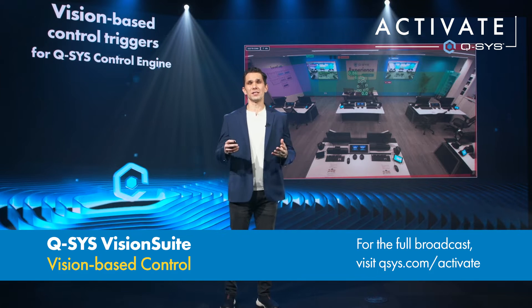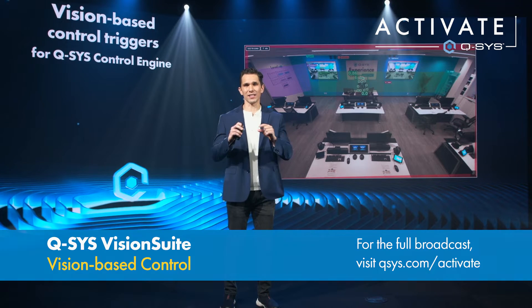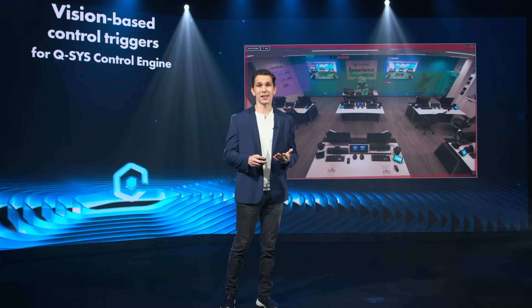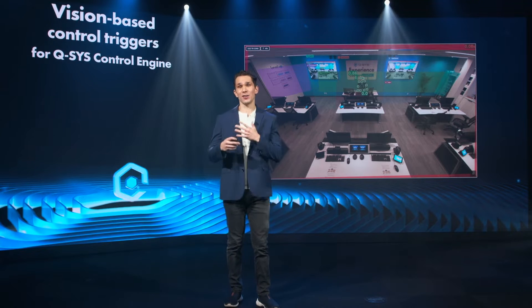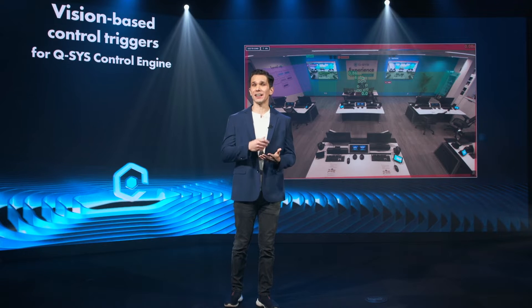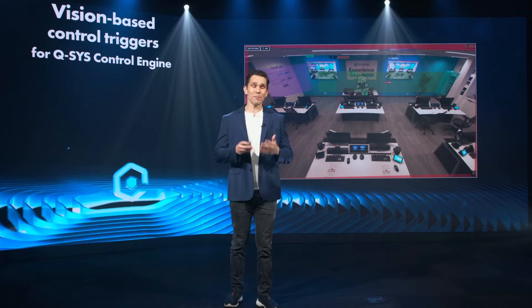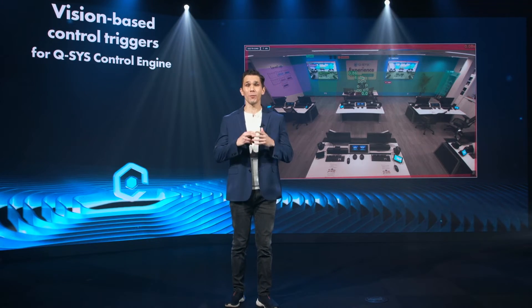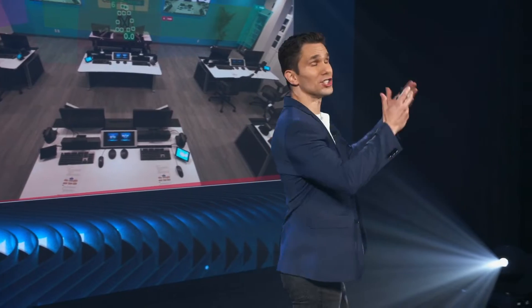Not only can you use these trigger zones and trigger areas to trigger camera-based activities, but because you have at your disposal the full might of the control engine integrated into that core processor, it means you can effectively use vision to trigger almost anything. So if you wanted a scenario where you want the presenter's lighting to change when he walks in a specific area, you can do that with a given trigger zone.